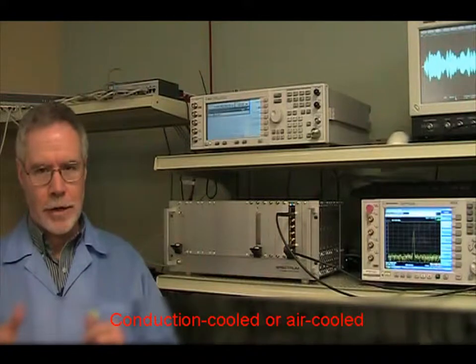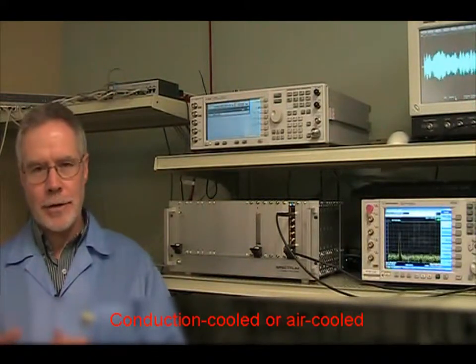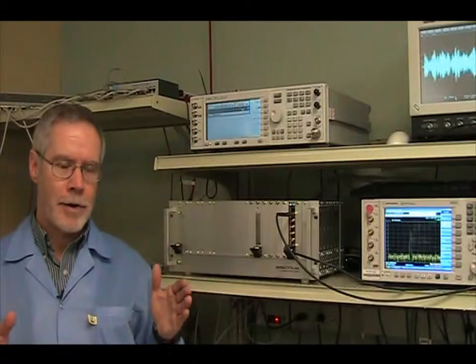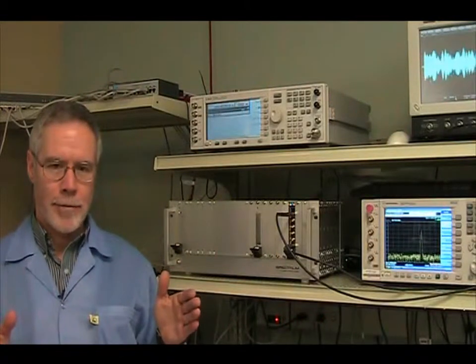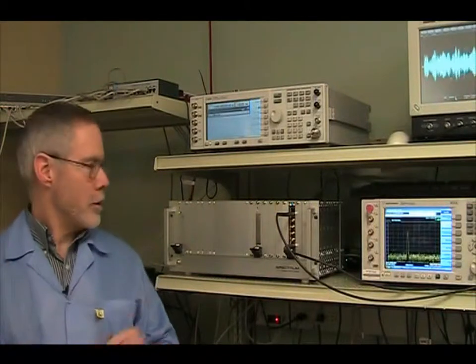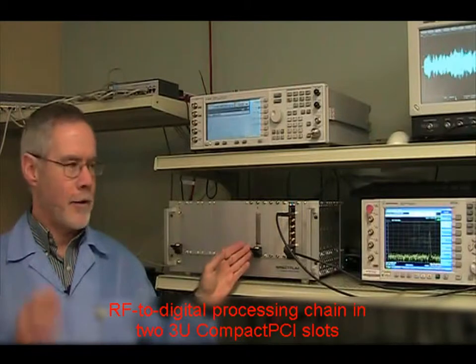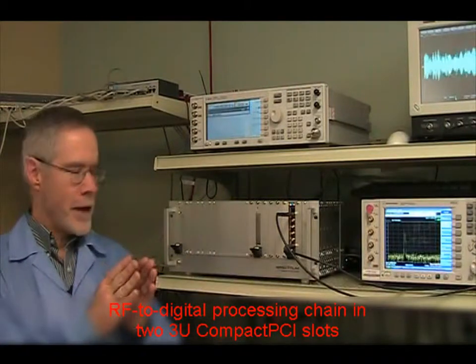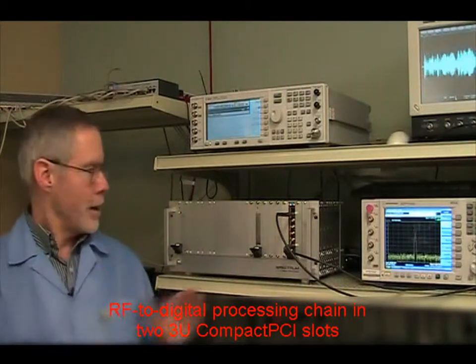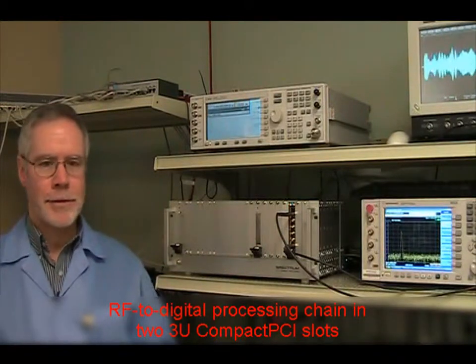Each board is available in both conduction-cooled and air-cooled format, so you can use it in the lab to develop your software and then migrate with the same hardware out to deployment, including rugged environments. You can do your complete RF-to-digital processing chain from RF to Ethernet in two compact PCI 3U slots, which helps you reduce your size, weight, and power for deployed systems.